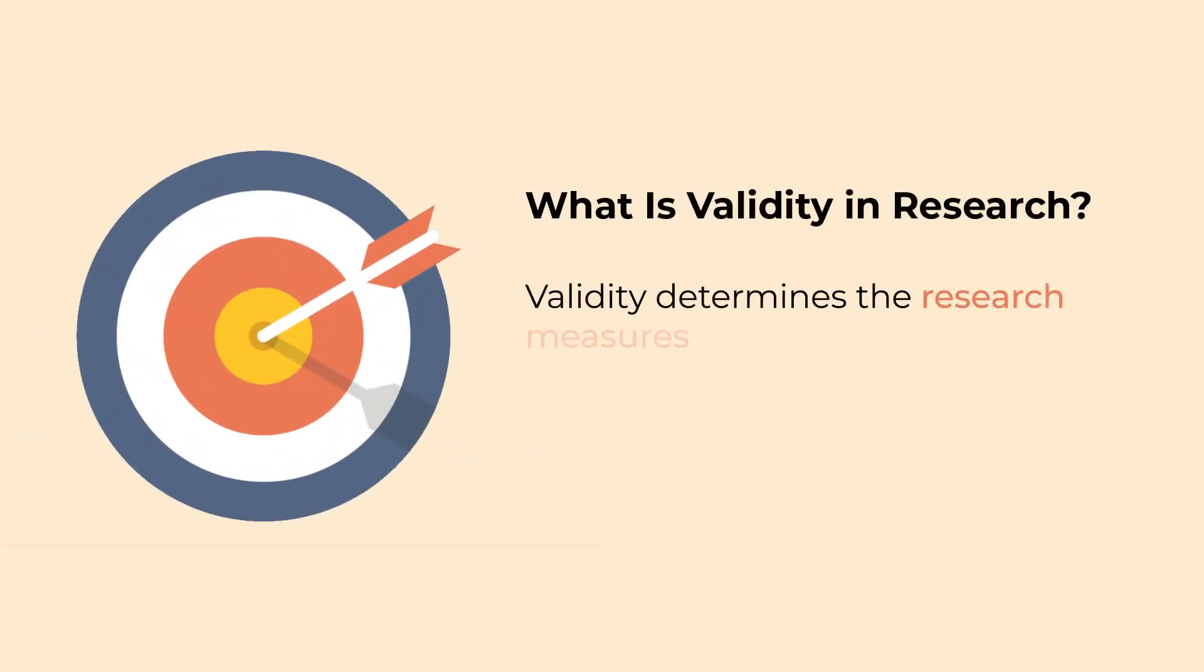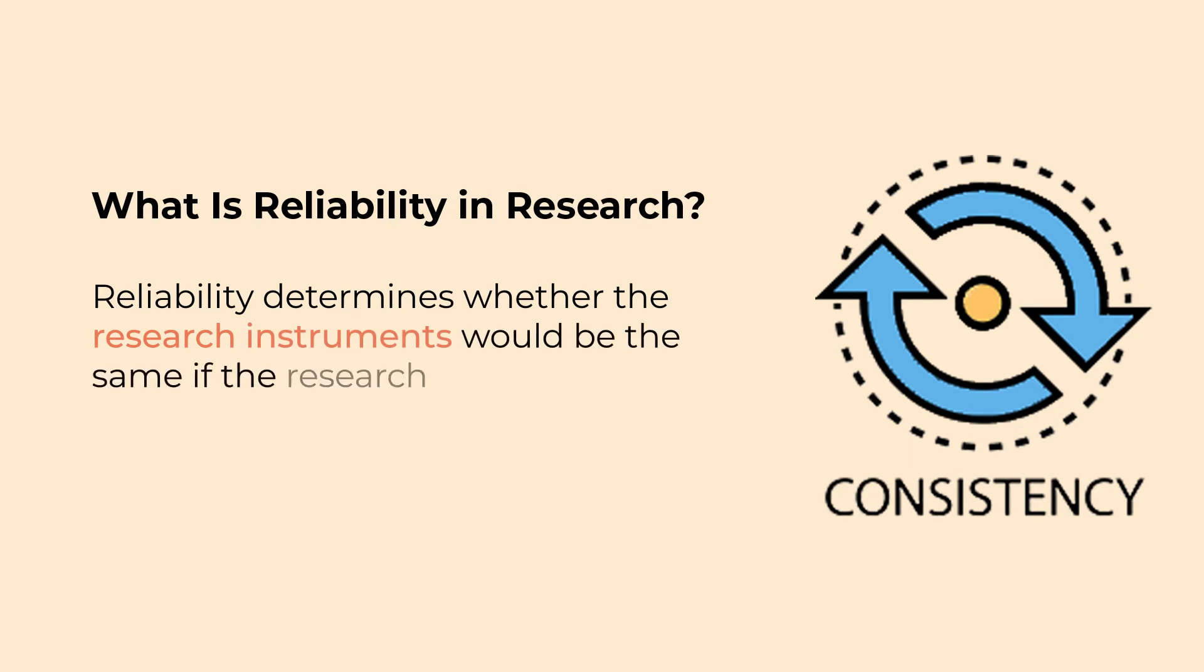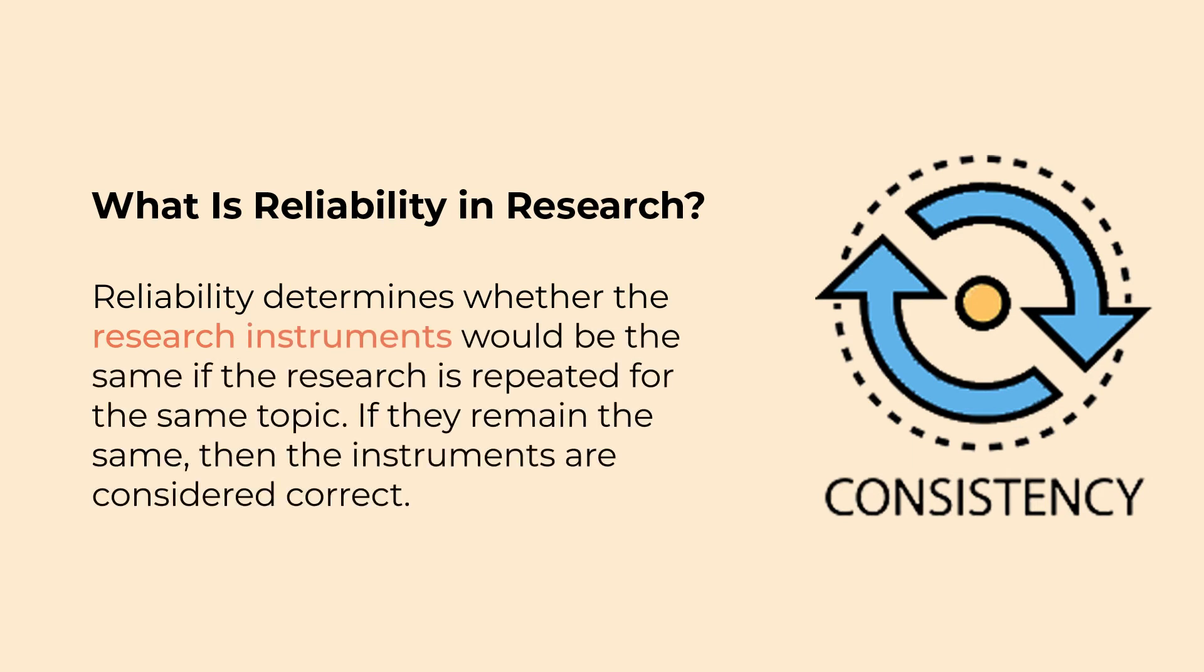You can determine the accuracy of the method through validity. It focuses on the accuracy of a method. Reliability denotes stable and consistent research. Let's know about the reliability and validity more.